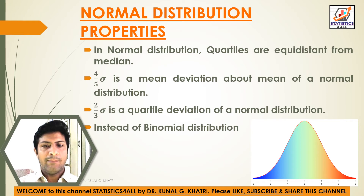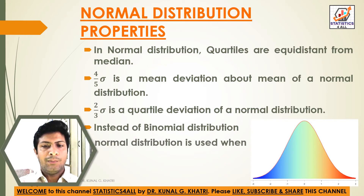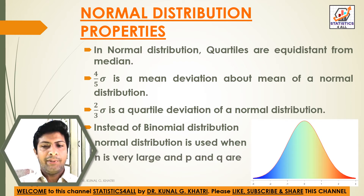Instead of Binomial Distribution, Normal Distribution is used when n is very large and p and q are not very small.